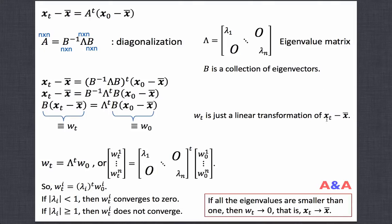The i-th W converges to 0 if lambda_i is smaller than 1 in absolute value. If lambda_i is larger than 1, the i-th W does not converge. If all eigenvalues — all lambdas — are smaller than 1 in absolute value, then the whole vector W converges to 0, meaning x_t converges to steady state x-bar. But what if some lambdas are smaller than 1 while others are larger than 1?